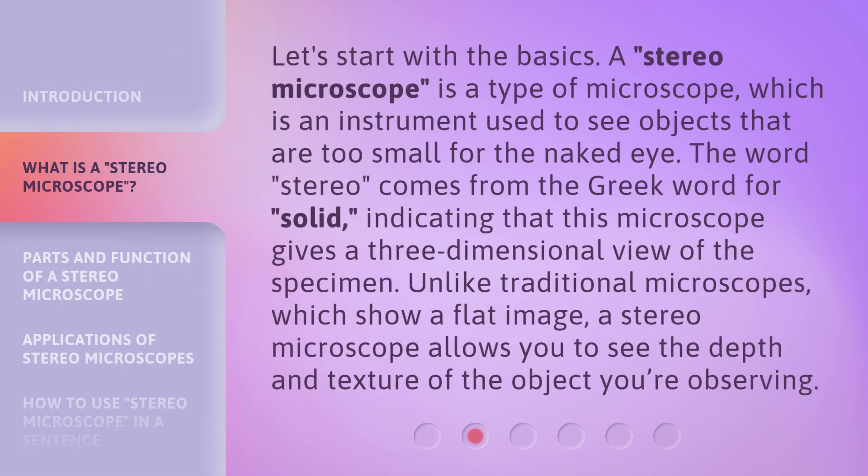Let's start with the basics. A stereomicroscope is a type of microscope, which is an instrument used to see objects that are too small for the naked eye. The word 'stereo' comes from the Greek word for 'solid,' indicating that this microscope gives a three-dimensional view of the specimen. Unlike traditional microscopes, which show a flat image, a stereomicroscope allows you to see the depth and texture of the object you're observing.